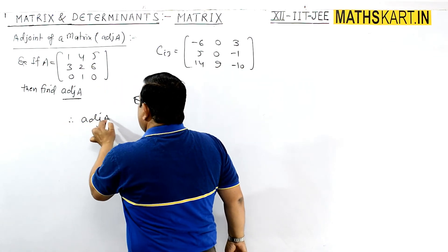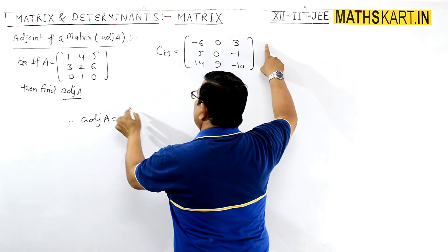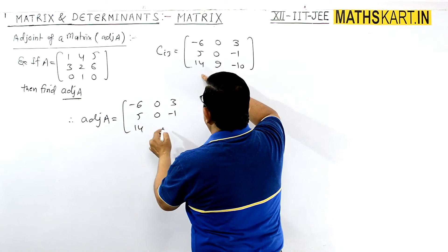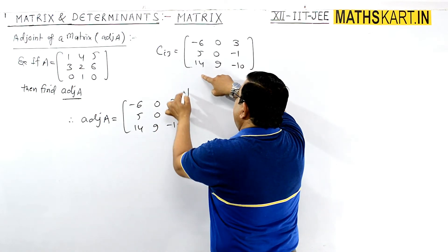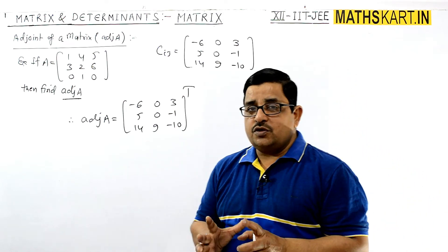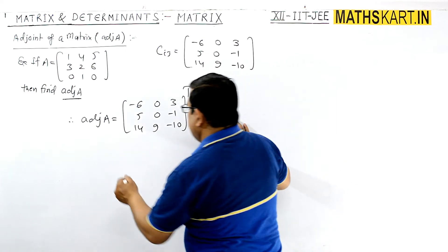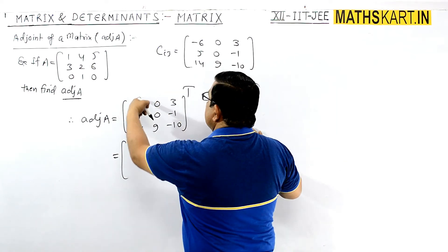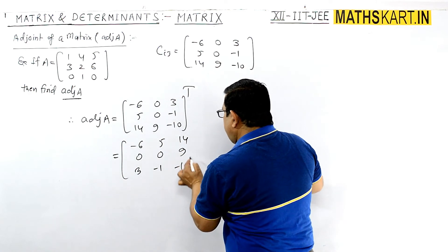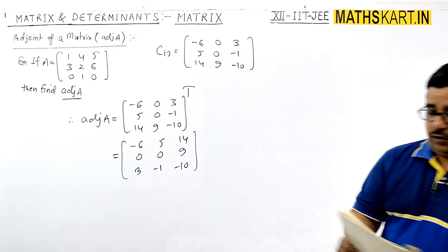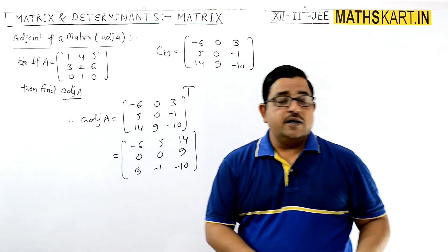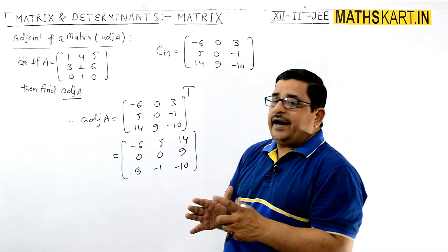Therefore, the adjoint of A is the transpose of the matrix of cofactors. Taking the transpose gives: adj A = [−6, 5, 14; 0, 0, 9; 3, −1, −10]. This is verified and correct. This is how we find the adjoint of any matrix.